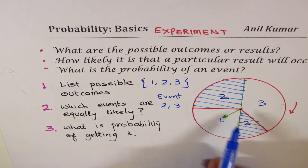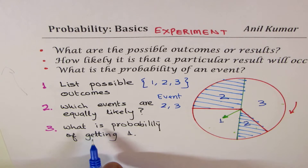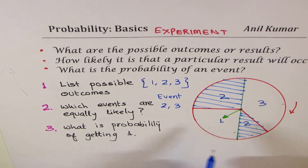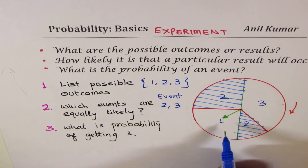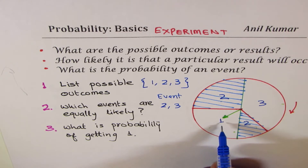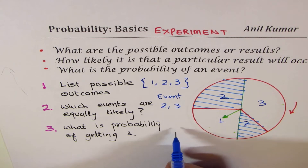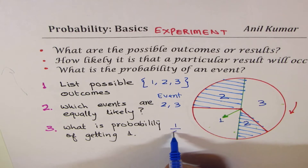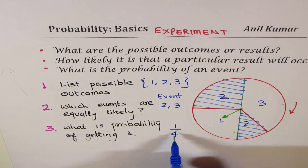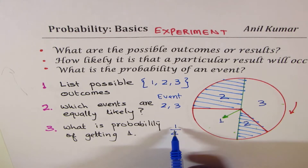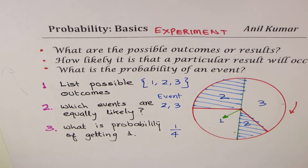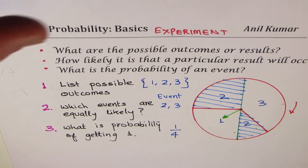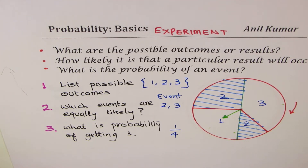Since the area of 2 and 3 is the same, what is the probability of getting 1? If I look at the whole circle, 1 occupies only one quarter of the area. So the probability is 1 out of 4. Probability is always a fraction between 0 and 1, both included.